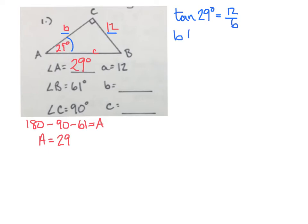So I'll just multiply both sides by b to get rid of the fraction, and then divide by tangent in order to get b alone.